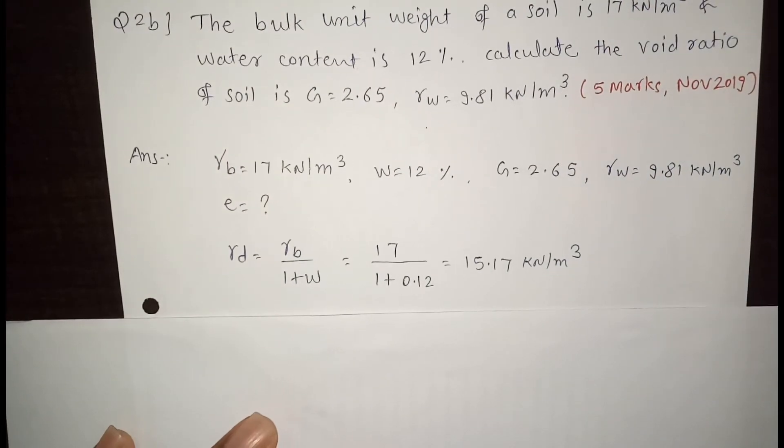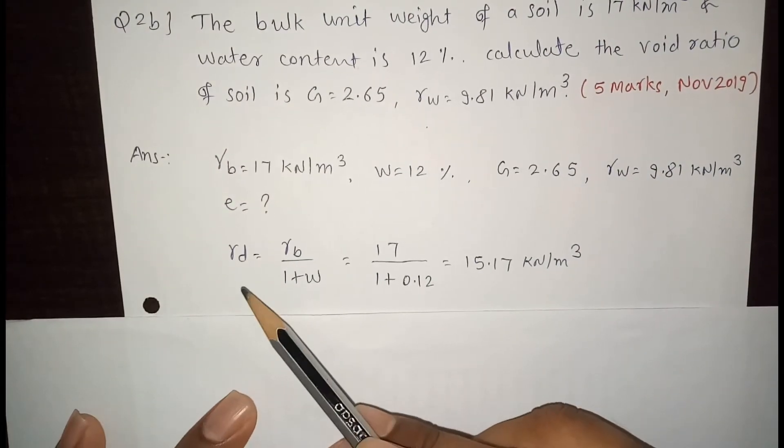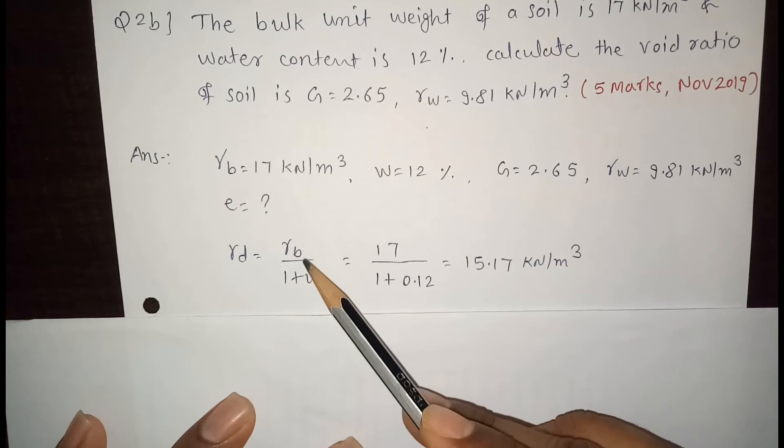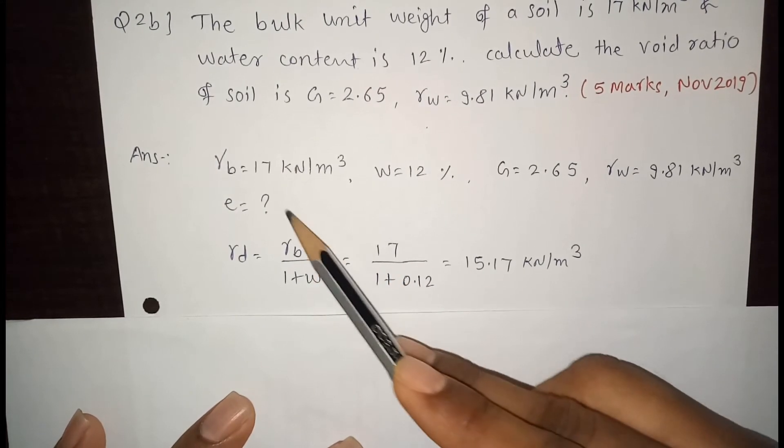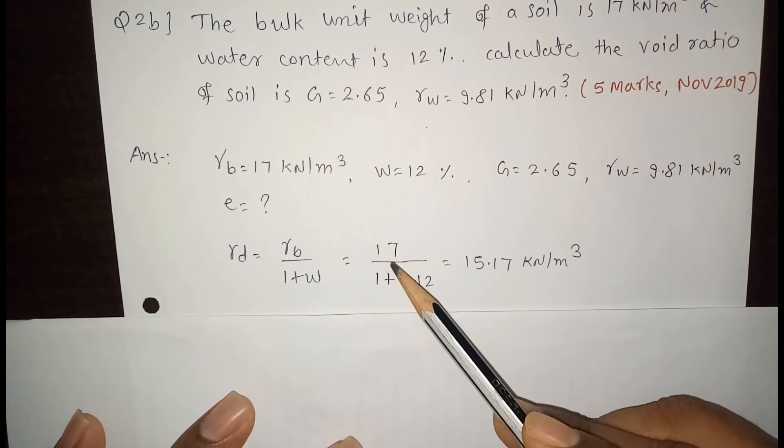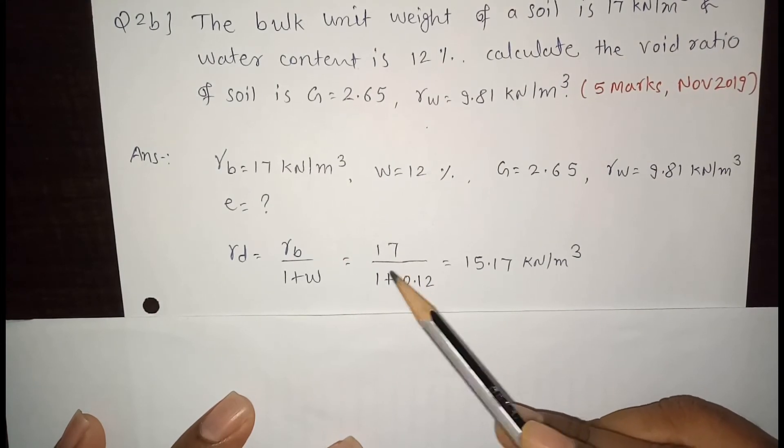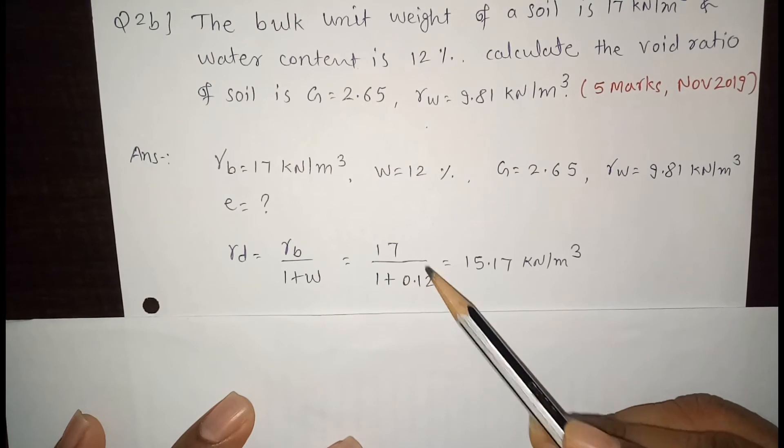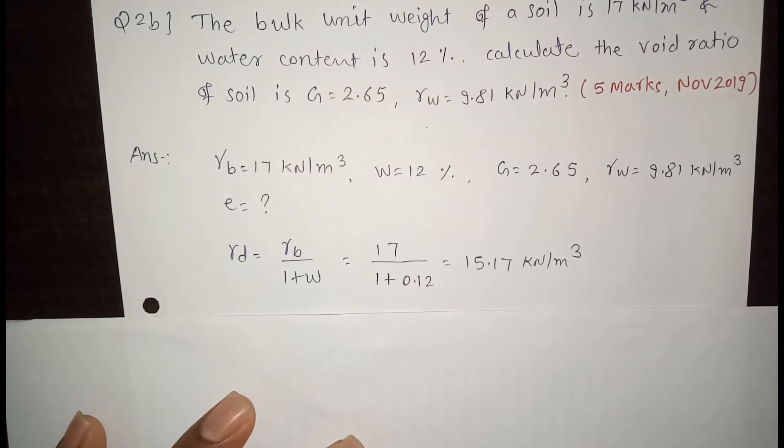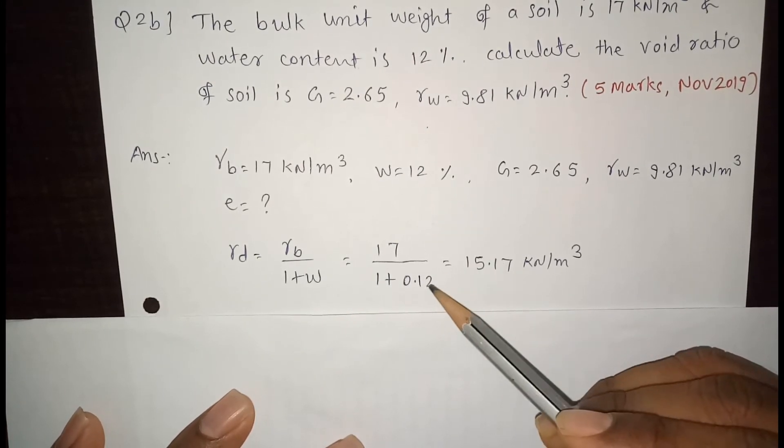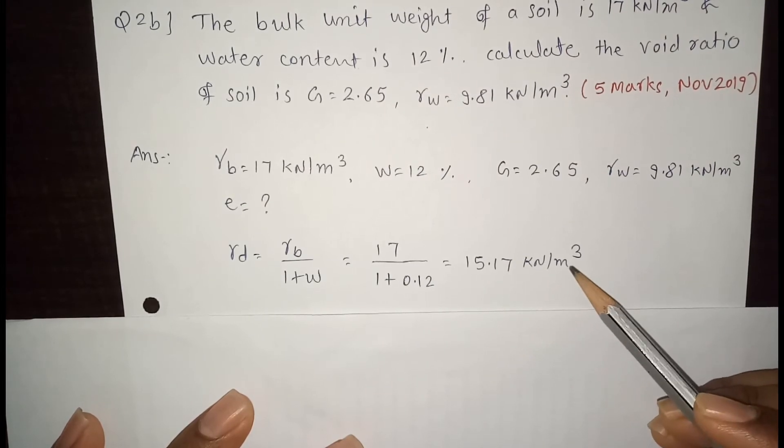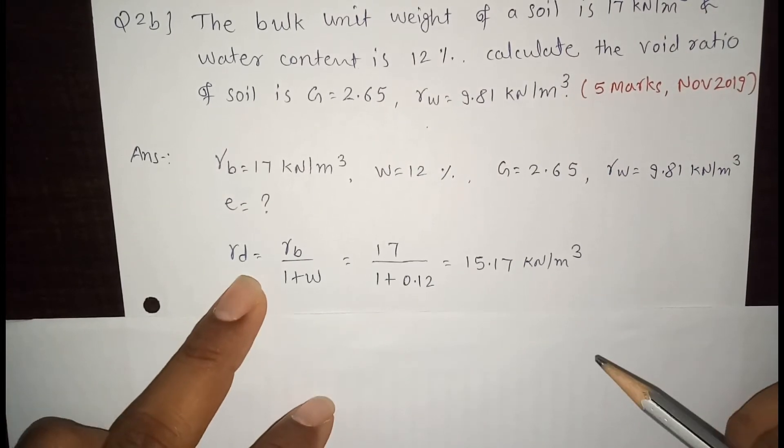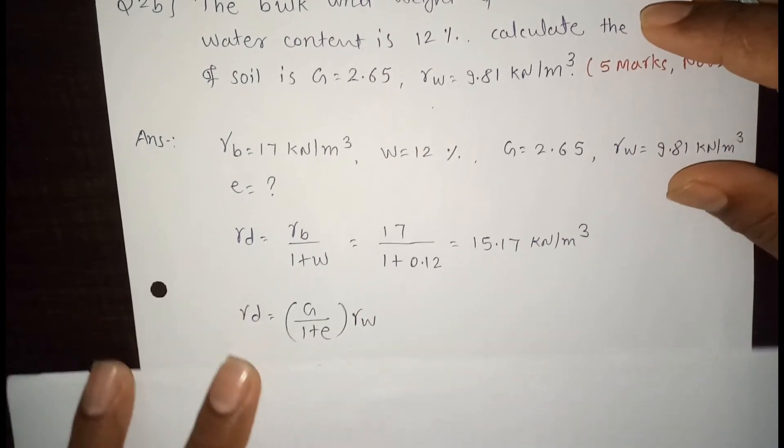We know that gamma D or dry unit weight is equal to bulk unit weight upon 1 plus W. W is the water content. So gamma B is 17 upon 1 plus water content is 0.12. W is given in percentage, so 0.12 equals 15.17 kN per m³. Dry unit weight is 15.17 kN per m³.